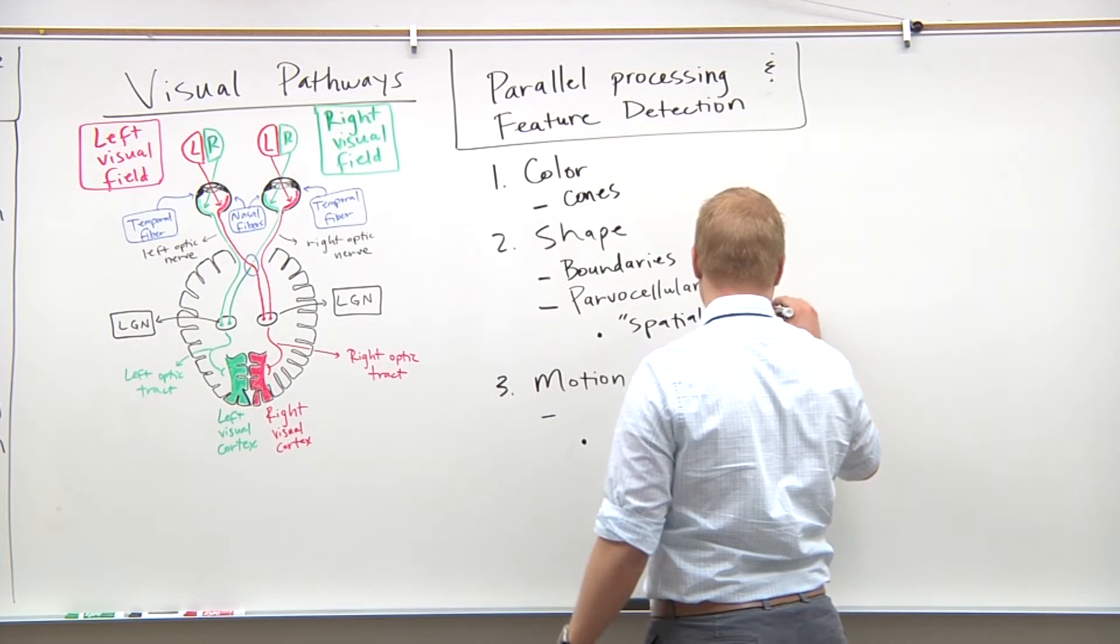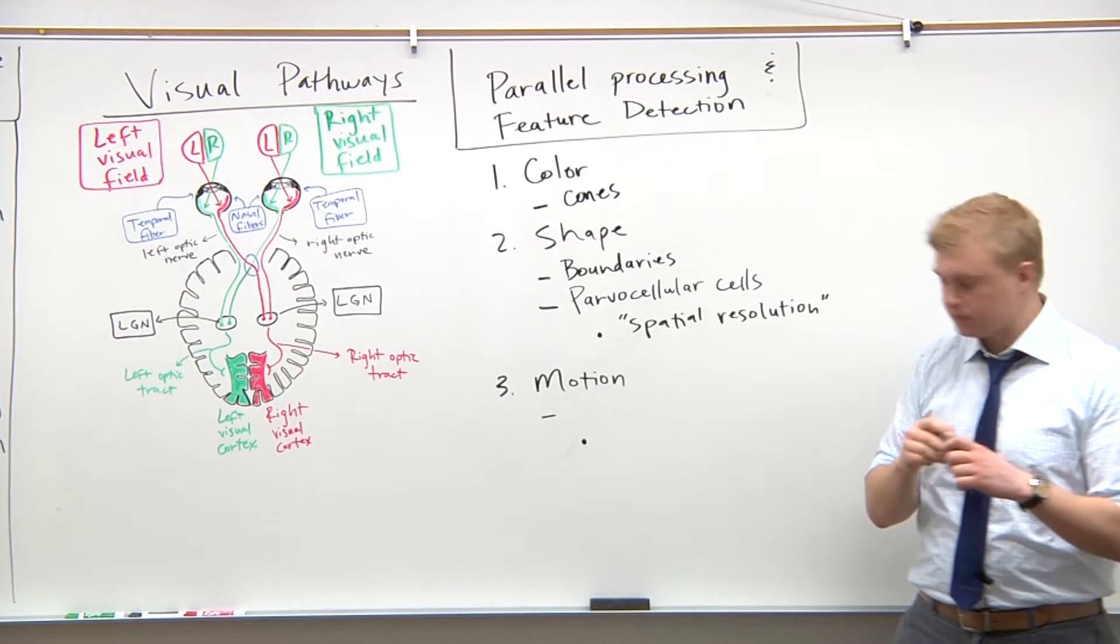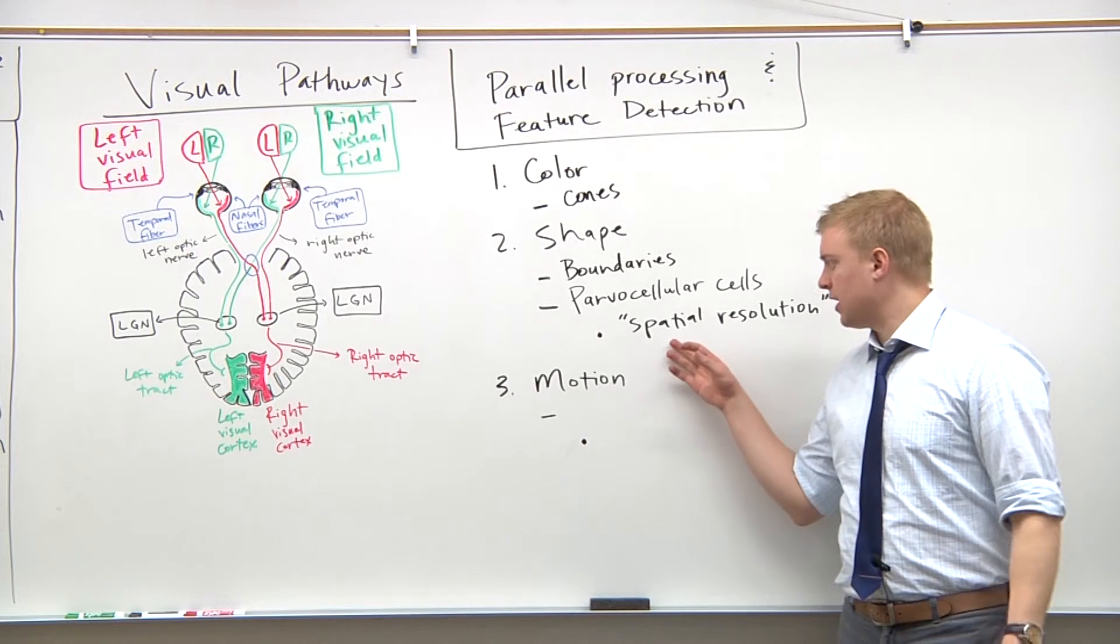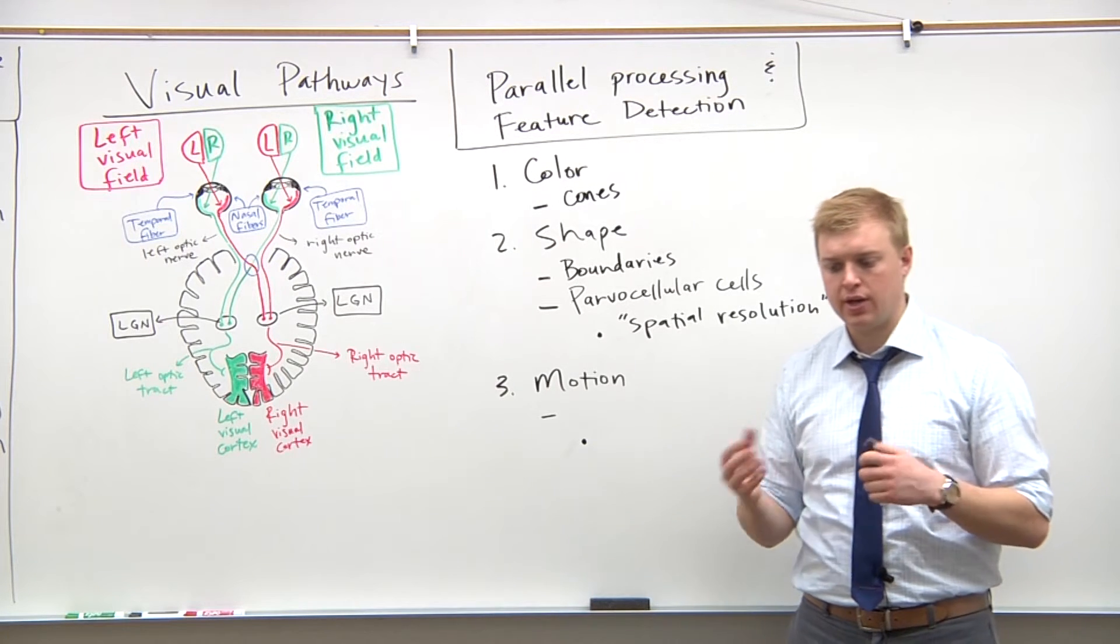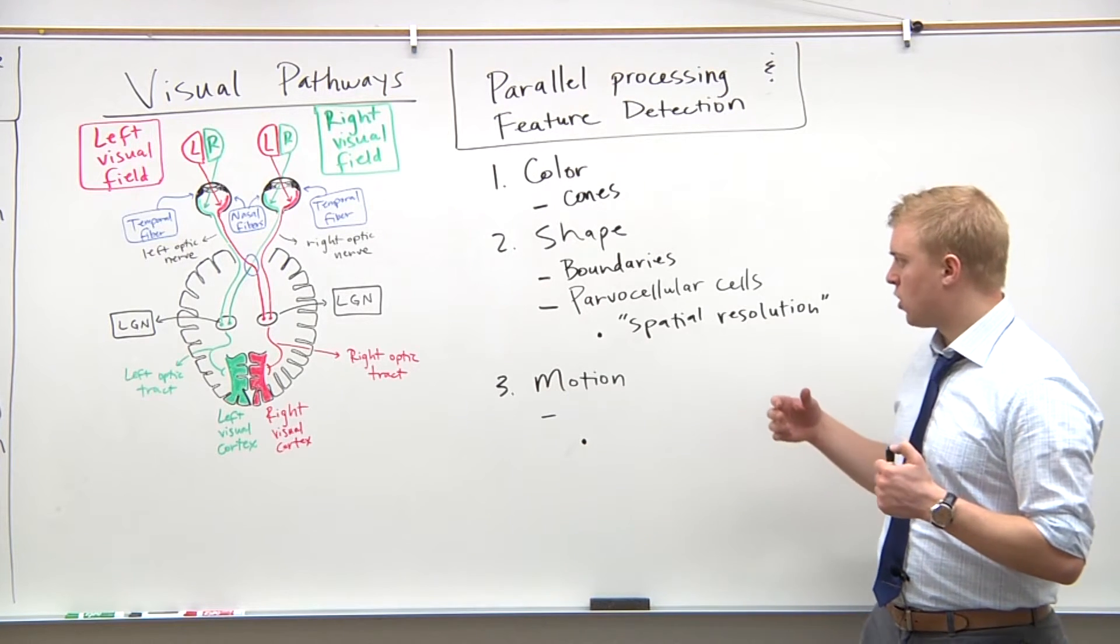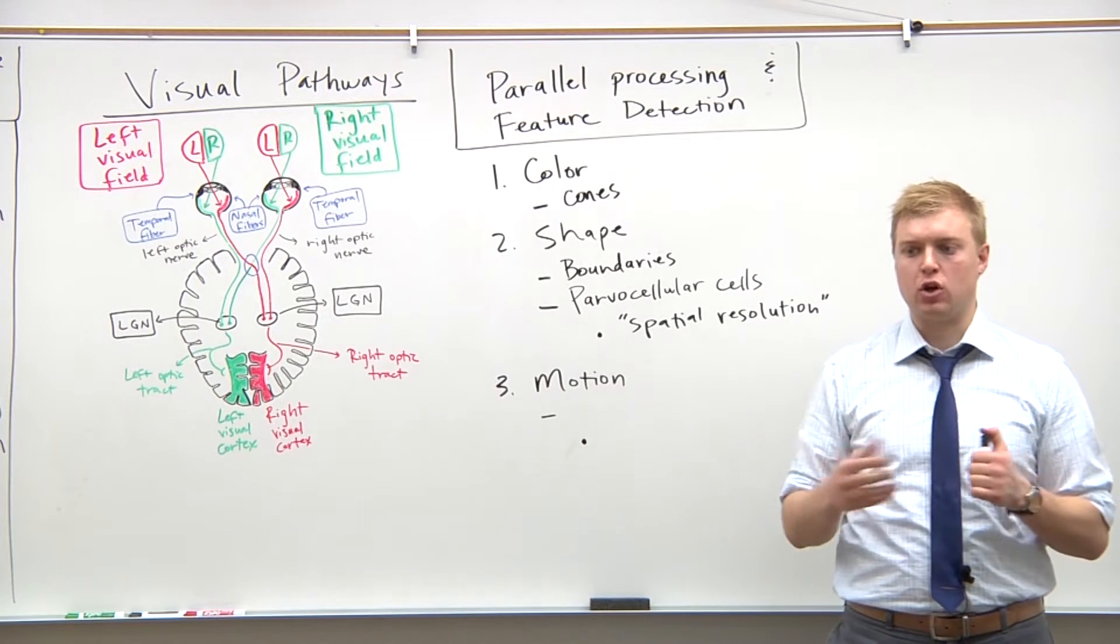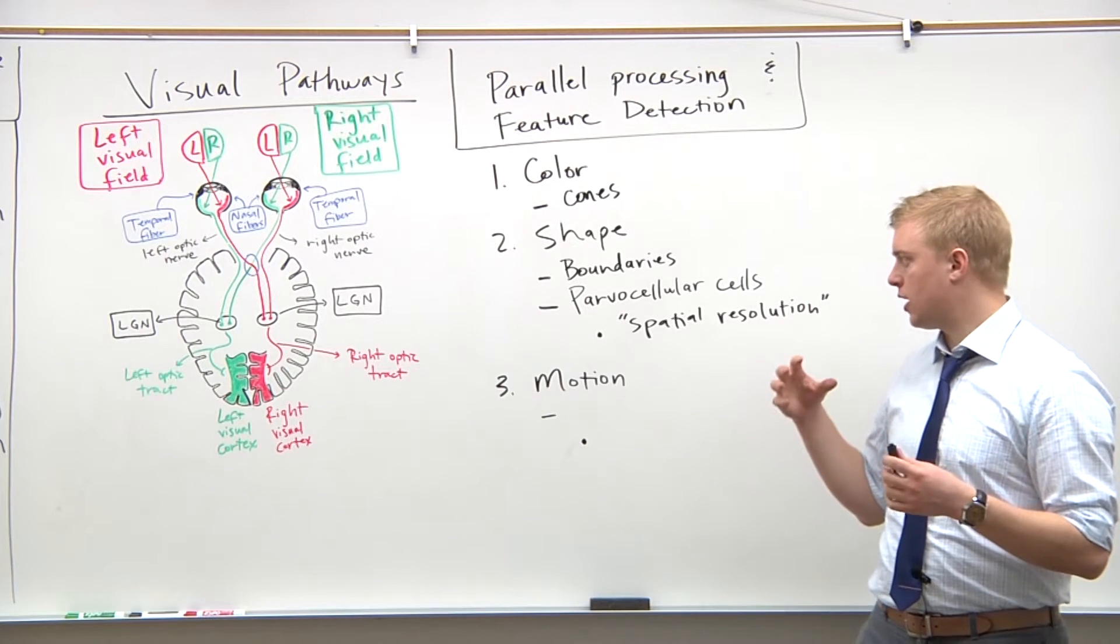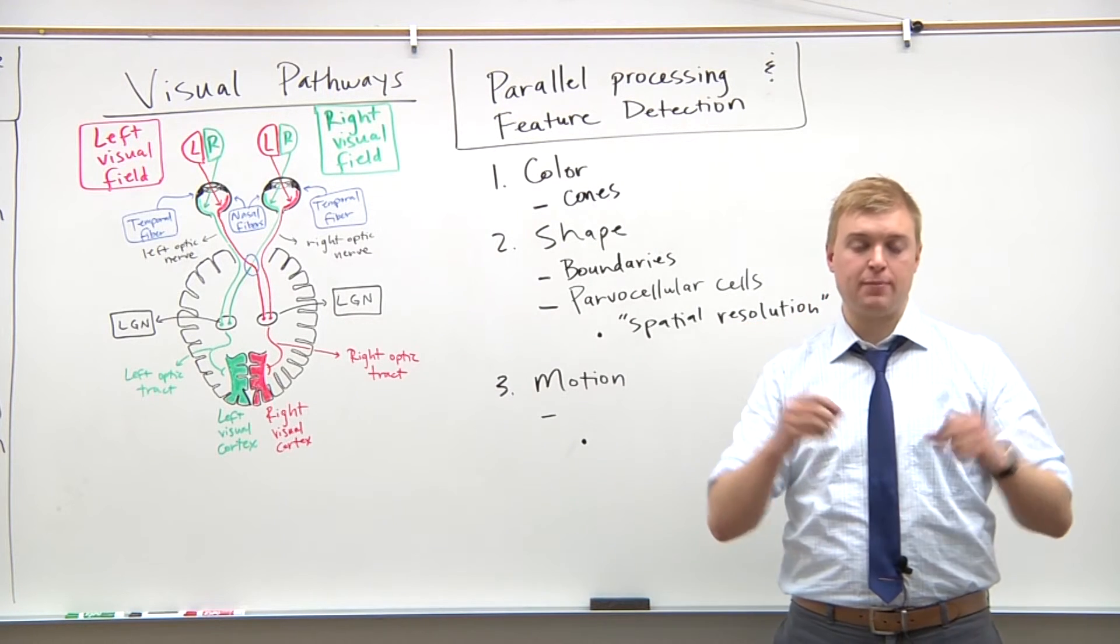And spatial resolution is referring to physical space, or what's the smallest feature of an object you can see? For example, if a CT scan has a spatial resolution of 10 to the negative third meters or one millimeter, whereas something like an electron or a light microscope would have anywhere from 10 to the negative six or 10 to the negative ninth meters. So an electron microscope would have a much higher spatial resolution.